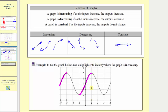Then from the input value of positive one to positive three, the graph is going downhill, so it's decreasing. But from the input value of three to the right, the graph is going uphill again, so the graph is increasing — as the inputs increase, the outputs increase over this part of the graph.